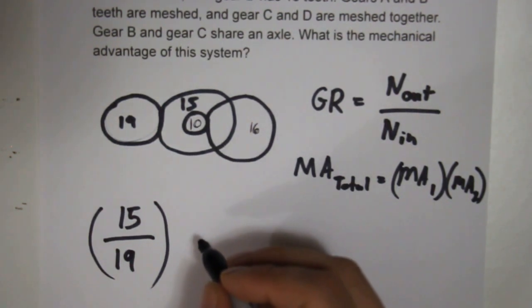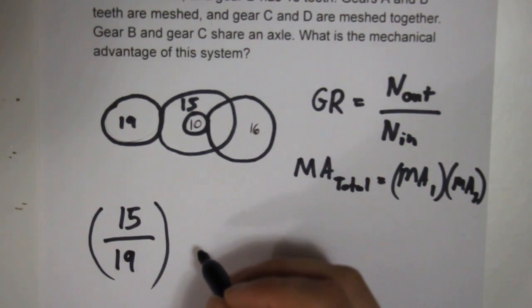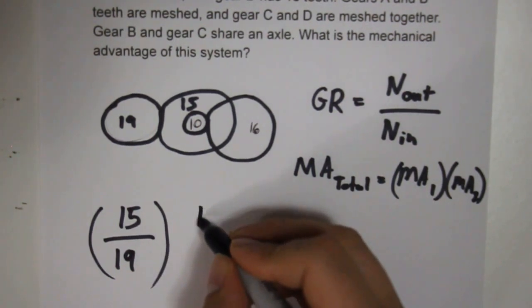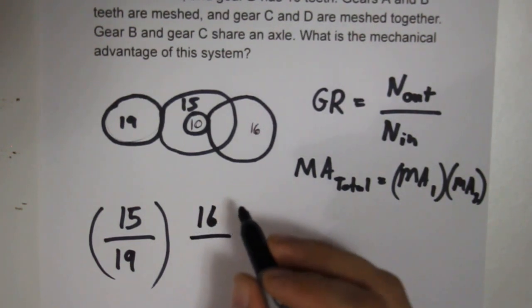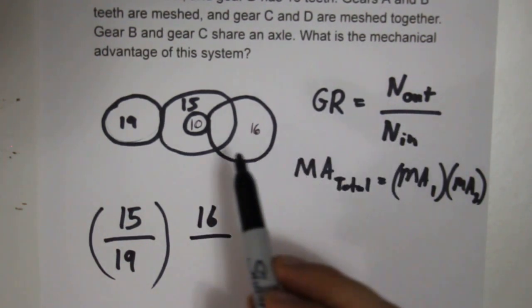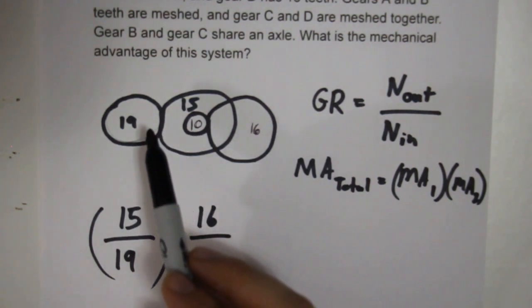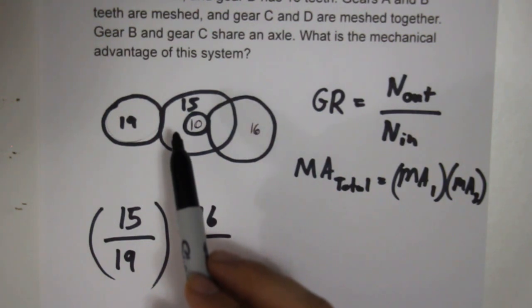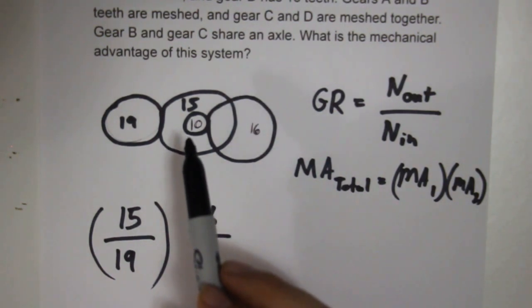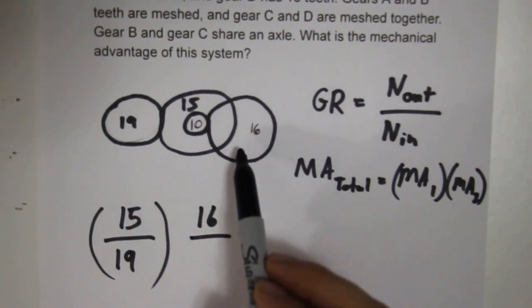D, we know, is the final output, divided by the input of the driven motor of C. Keep in mind that, since A is driving B, B is driving C. C is, therefore, driving D.